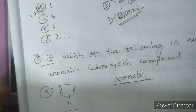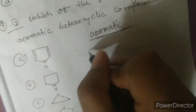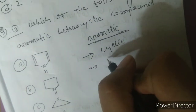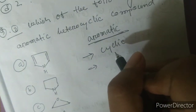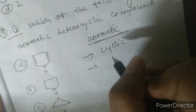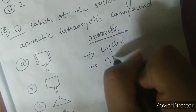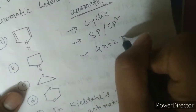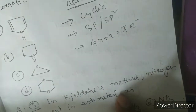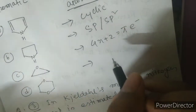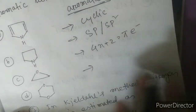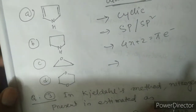To be aromatic, a compound must fulfill a few criteria. Number one: it should be cyclic. Number two: it should be planar — you can confirm planarity from hybridization; either sp or sp2 hybridization means planar. Number three: it should follow Hückel's rule — 4n + 2 equals the number of pi electrons. Complete cyclization should also be present. Knowing these three criteria is sufficient.